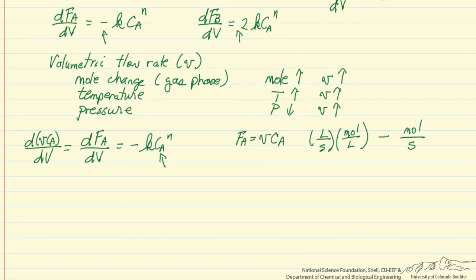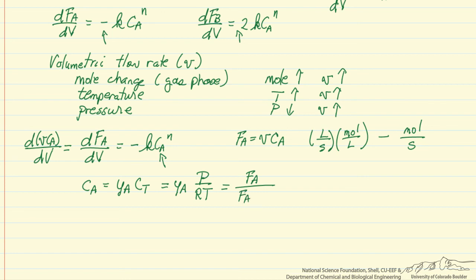We are going to do that by using the ideal gas law. The concentration of A at any point in the reactor is the mole fraction of A times the total gas phase concentration. The total gas phase concentration is the pressure over the gas constant times the absolute temperature. The mole fraction of A at any point is the molar flow rate of A over the total molar flow rate, which in this case is F_A plus F_B. This substitution for the concentration into the mole balance for A and B provides a set of equations we can solve simultaneously.